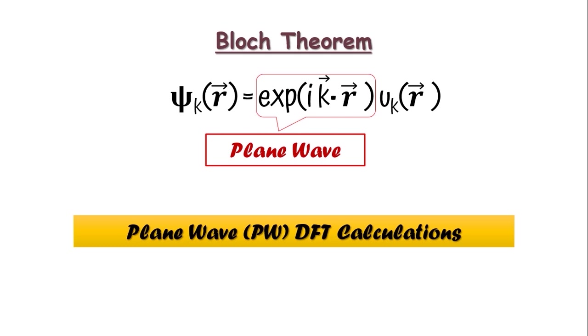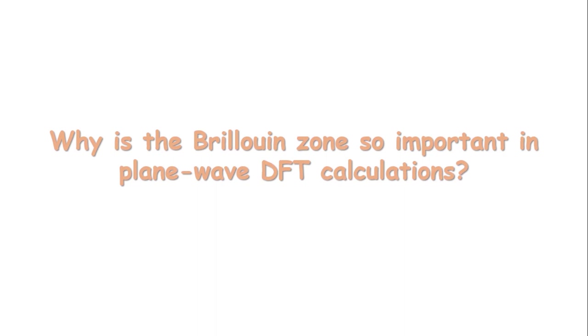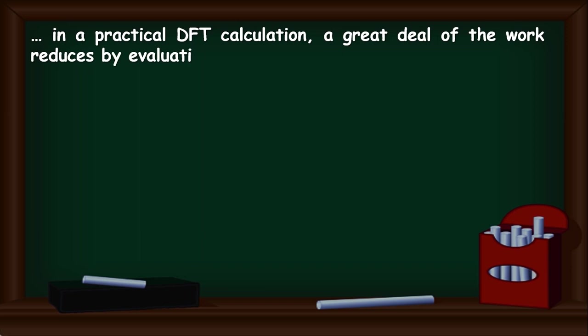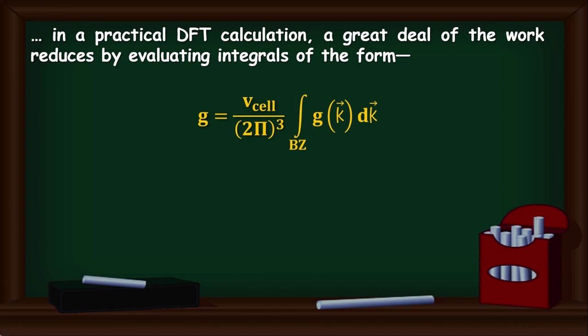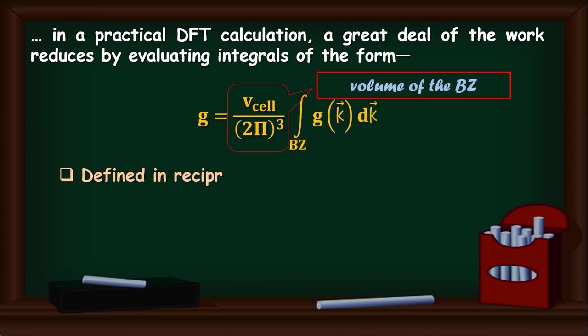Now, why is the use of Brillouin zone is so important in plane wave DFT calculation? The simple answer to this question is, in a practical DFT calculation, a great deal of the workload reduces by evaluating the integrals of the form g equals to v shell divided by 2 pi whole cube integrated over Brillouin zone g of k dk, where this v shell by 2 pi whole cube is the volume of the Brillouin zone. Now, let's neglect the scribbling mathematics behind this integral. And for concept, just know that the key features of this integral are that it is defined in the reciprocal space and that it integrates only over the possible values of k in the Brillouin zone.